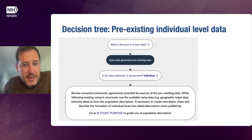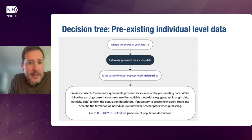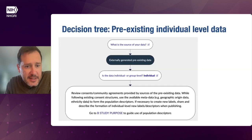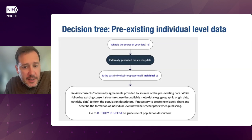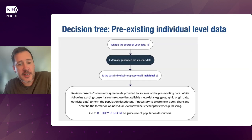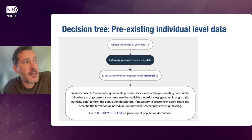Suppose your data source is externally generated preexisting legacy data. You're asked whether the data is individual or group level. If you answer individual, it will prompt you to review consents and community agreements provided by sources of the preexisting data. Then, while following these consent structures, use the available metadata — say geographic origin or ethnicity data — to form the population descriptors you'll use. If necessary to create new labels, share and describe the formation of those new labels when you publish.